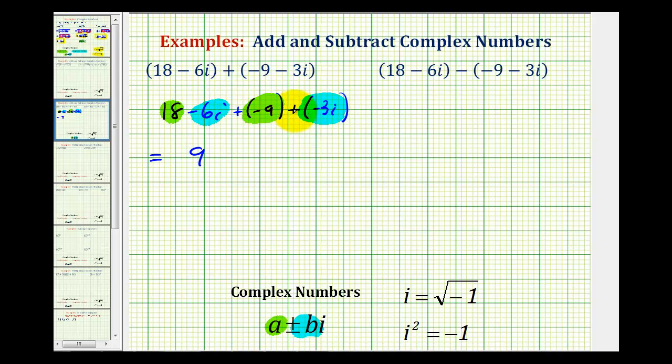For the imaginary parts, we have negative 6i plus negative 3i, which is equal to negative 9i. We could write plus negative 9i, but it's more common to write minus 9i. We want to put the real part first and the imaginary part second, so the complex number is in the correct form.